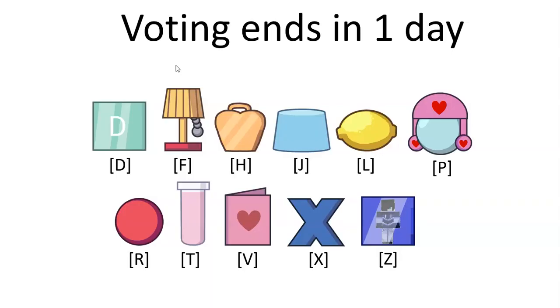Alright viewers, and that's it. Vote for either Destiny, Floralamp, Hardlocket, Jelly, Lemon, Pearl, Red Ball, Test Doe, Valentine's Card, X, or Zane Image to be eliminated. Vote against it one day after this video is released. Don't forget to recommend a character or make a fine art of the show if you wanted to. See you guys next time!